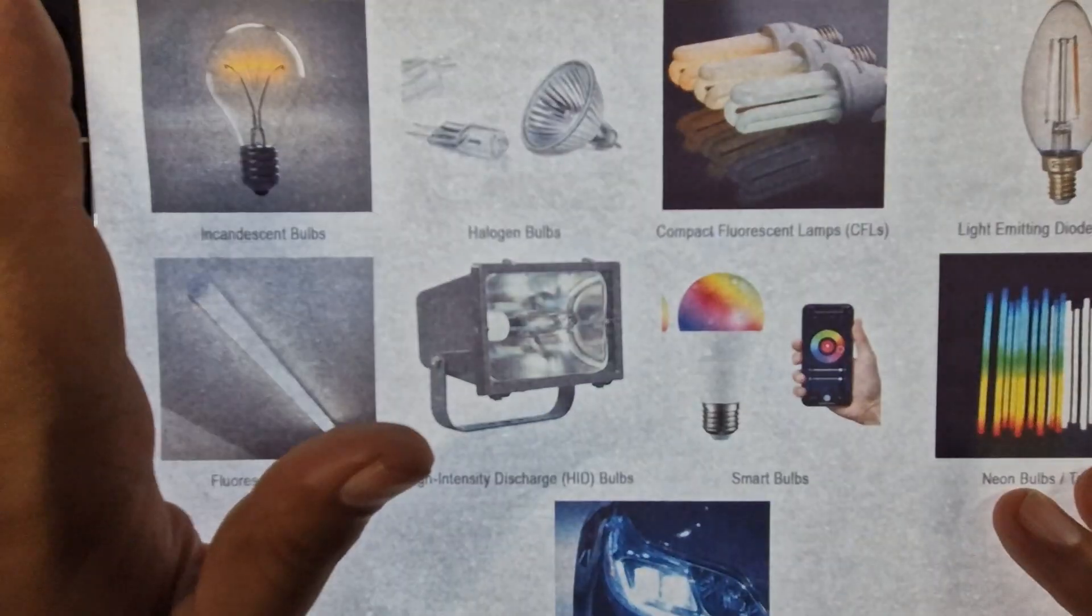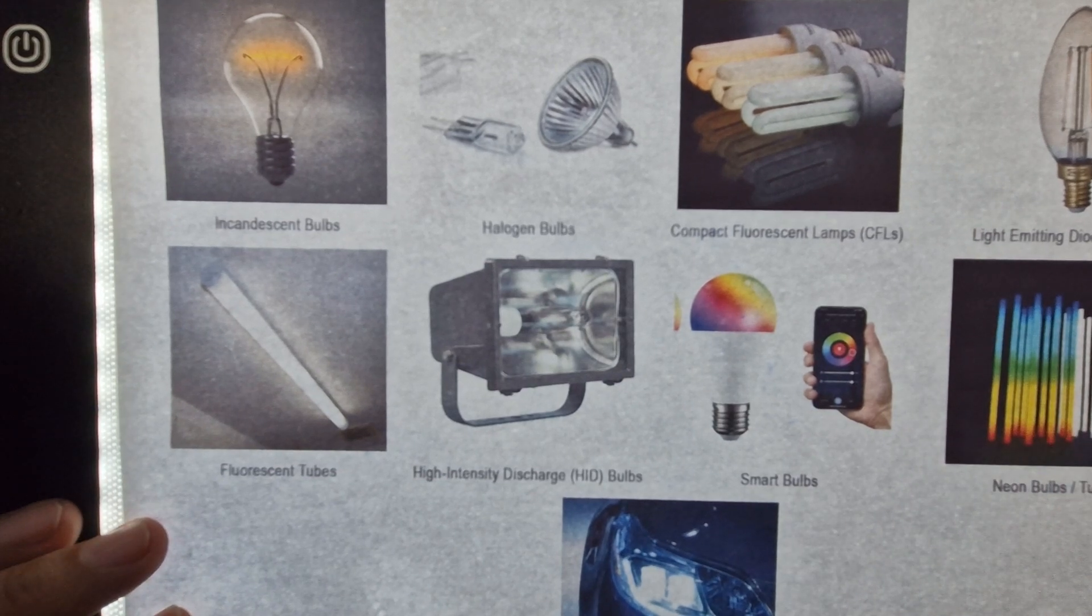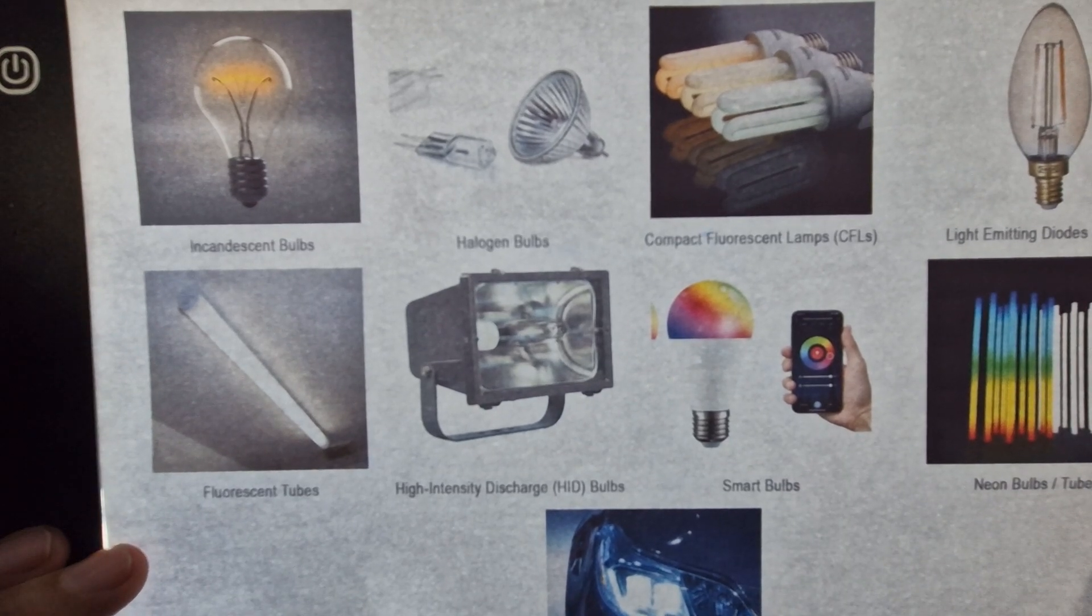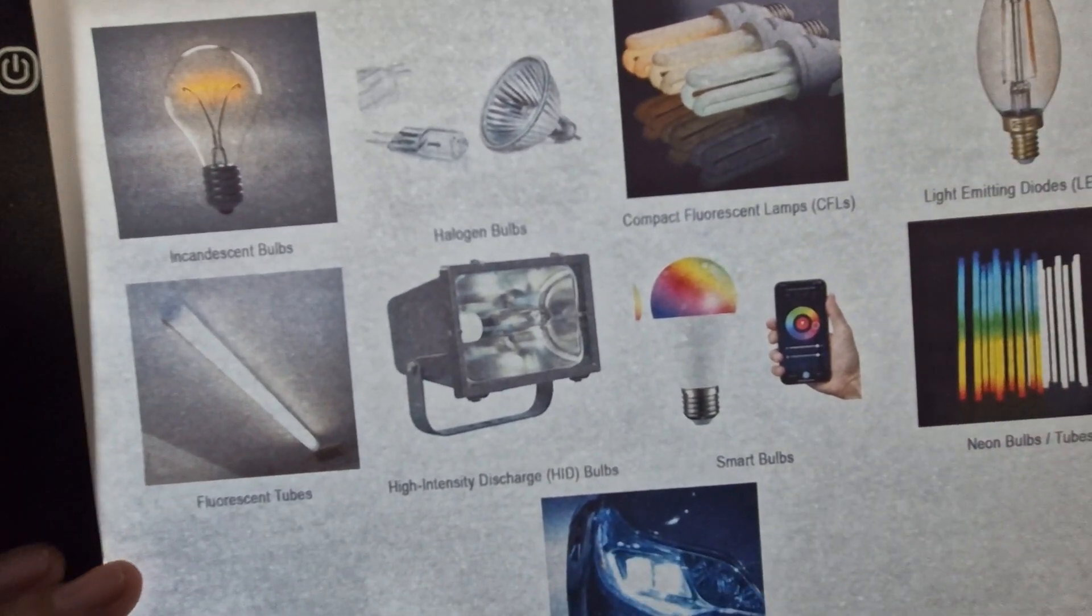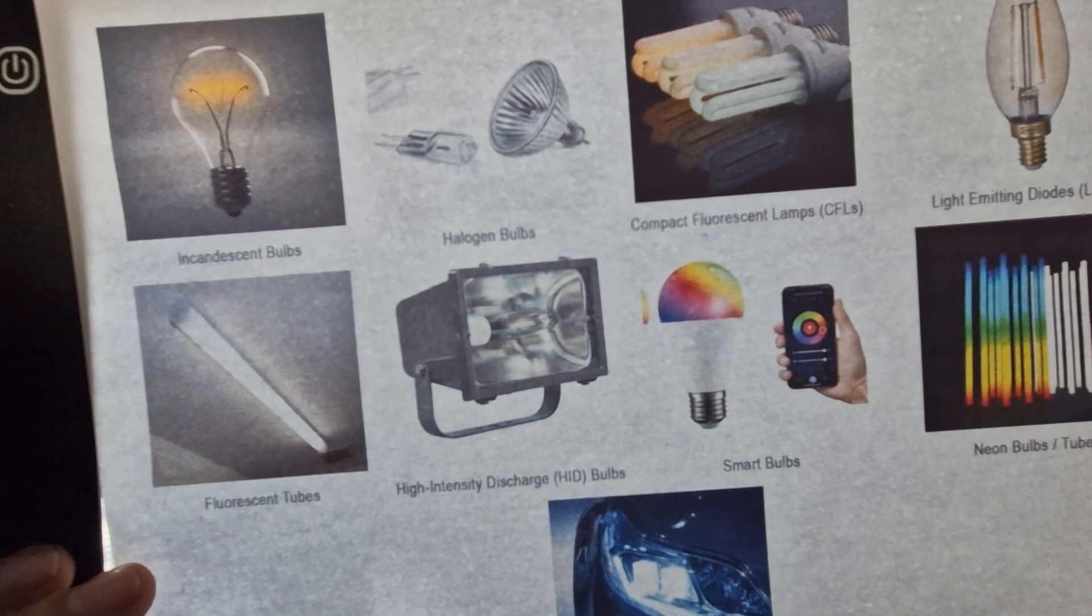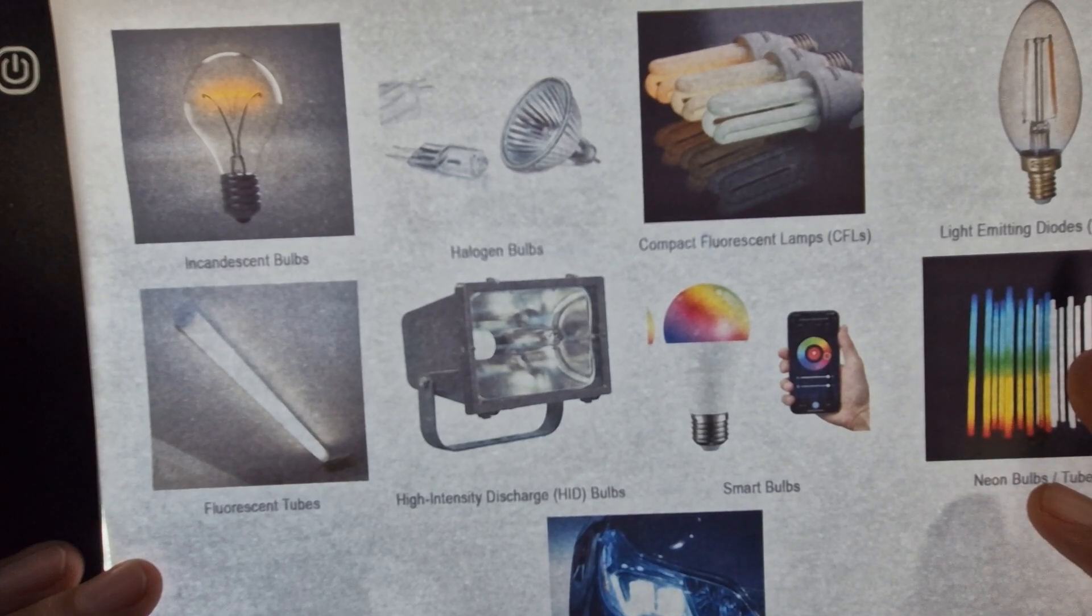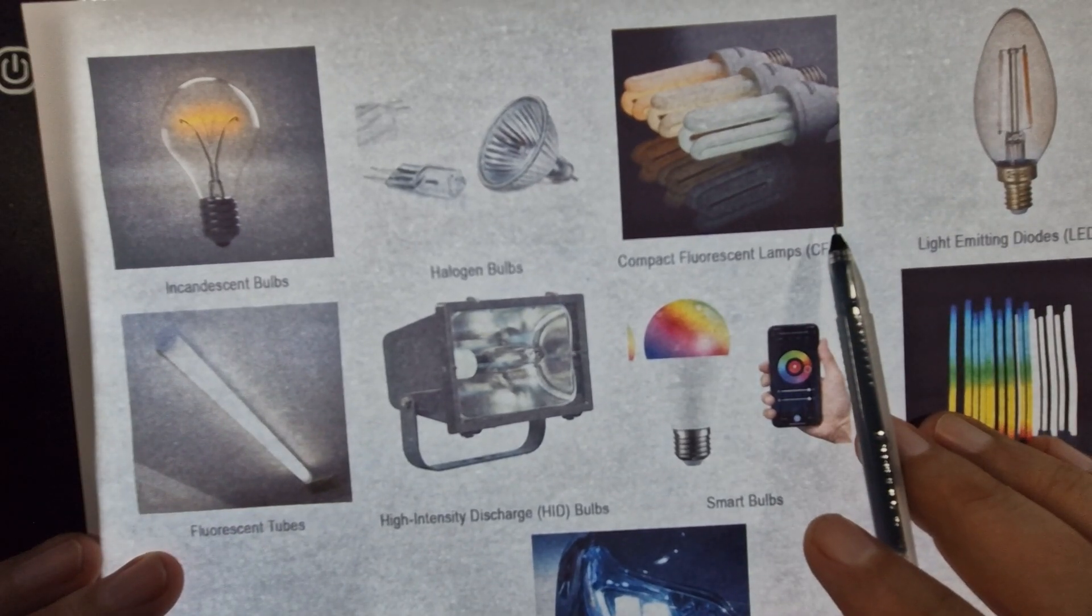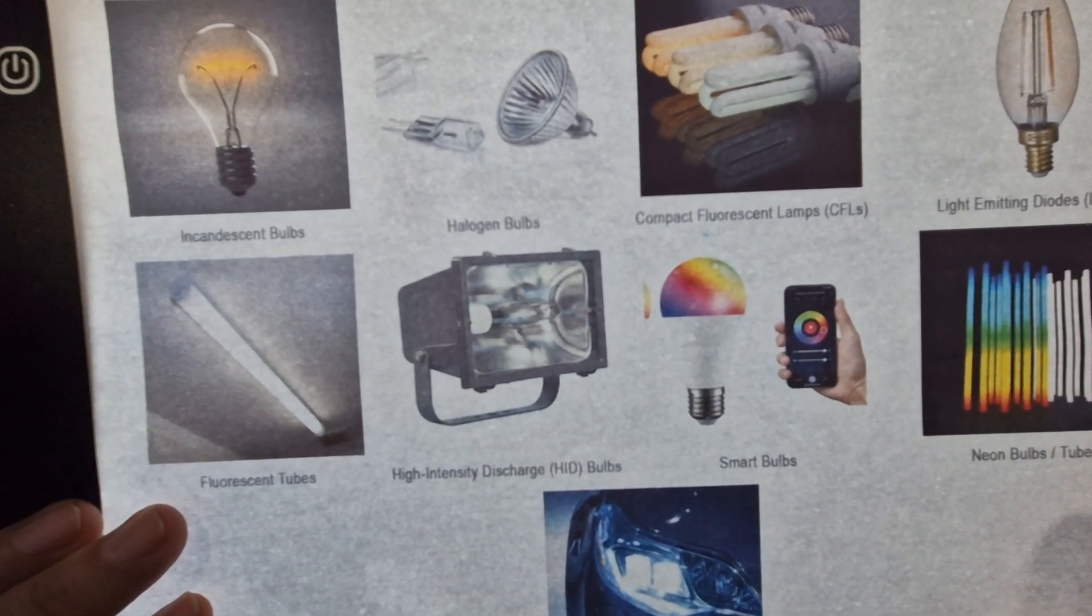Hello and welcome for another How It Works ASMR. This time the topic is the types of light bulbs and their technology. There are several types of light bulbs and each of them has distinct characteristics, uses and benefits. Here are the nine main types with their technology.